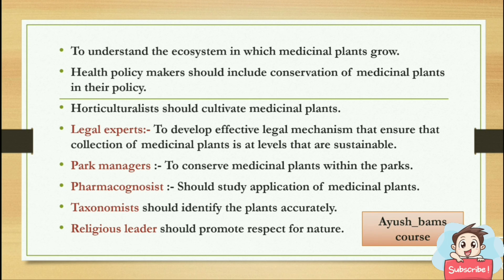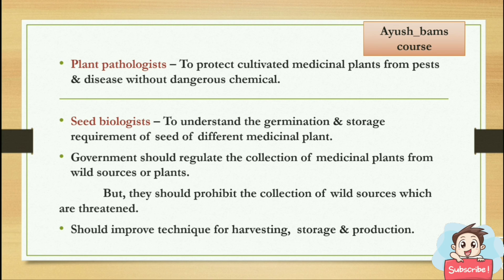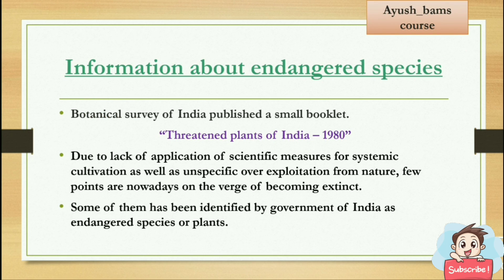Pharmacologists should study the application of medicinal plants. Taxonomists should identify plants accurately. Religious leaders should promote respect for nature. Plant pathologists should protect cultivated medicinal plants from pests and disease without dangerous chemicals. Seed biologists should understand the germination and storage requirements of seeds of different medicinal plants. Governments should regulate the collection of medicinal plants from wild sources but prohibit collection of threatened wild species. Harvesting, storage, and production techniques should also be improved.